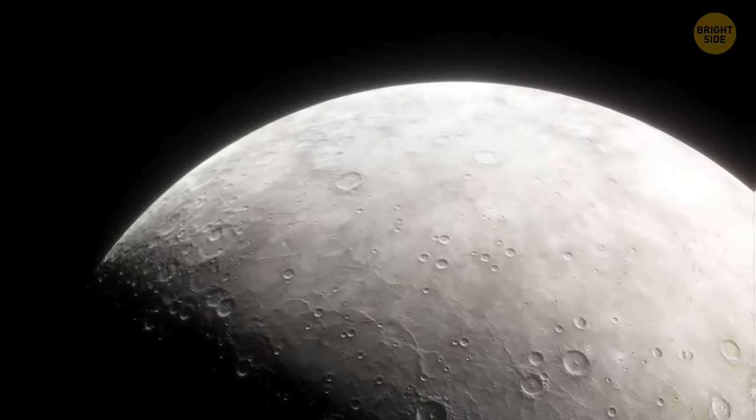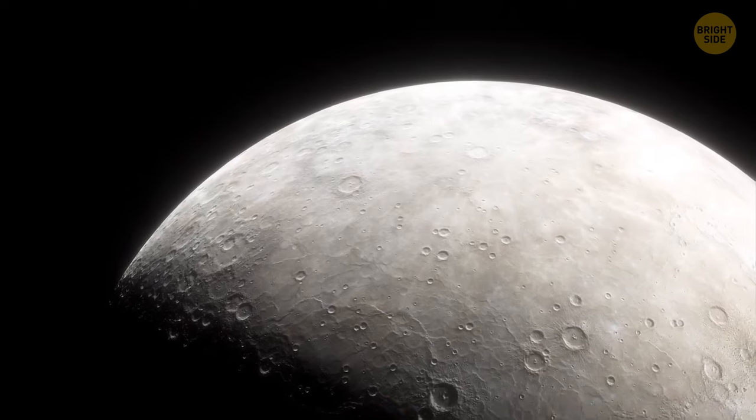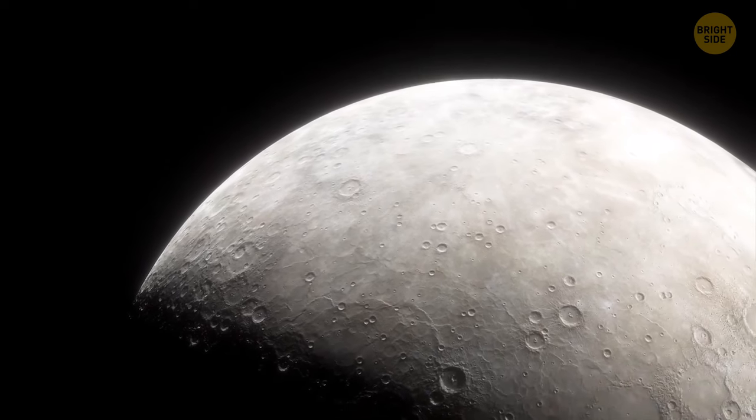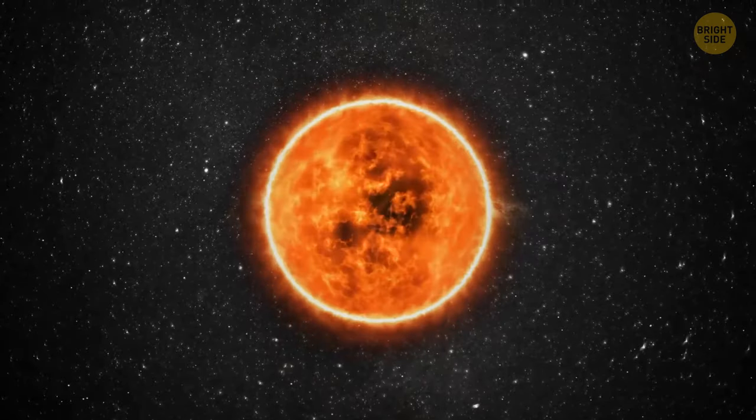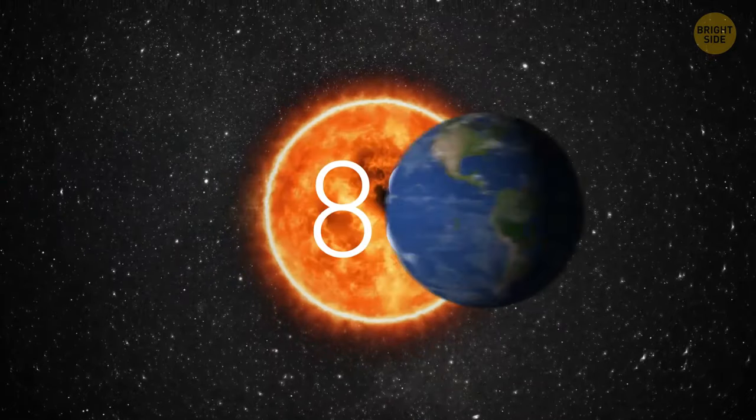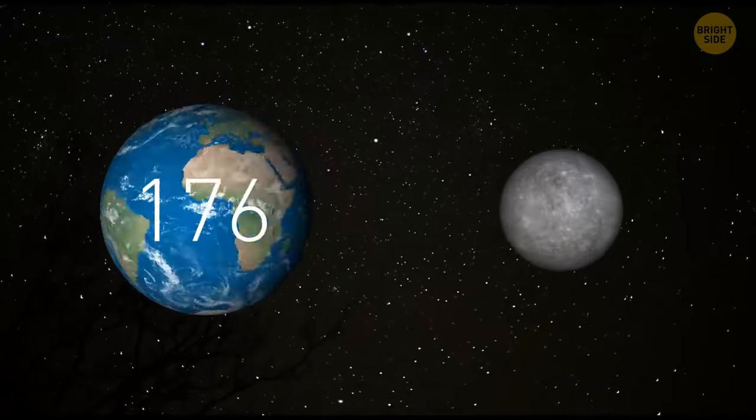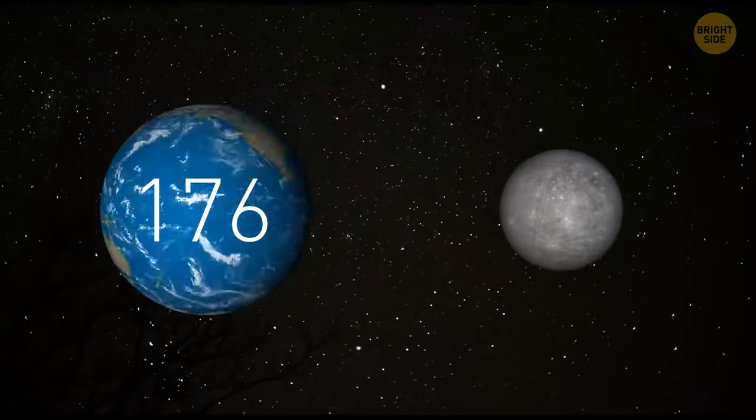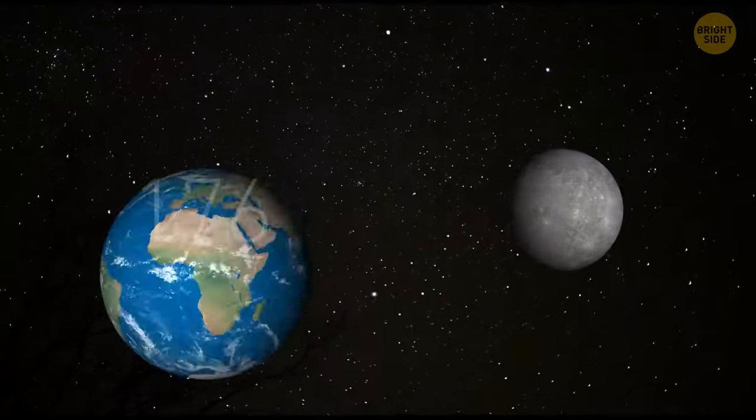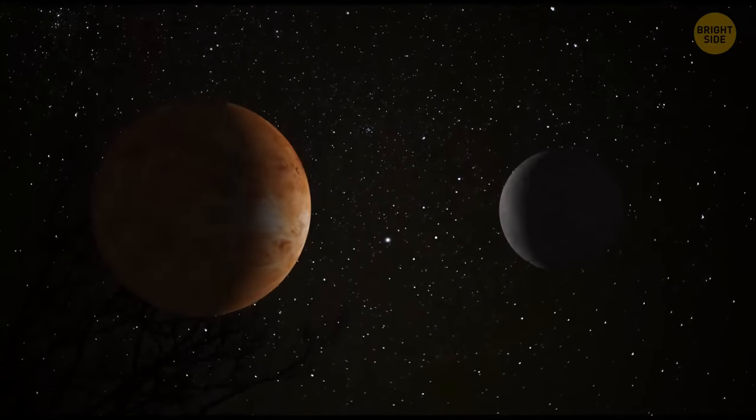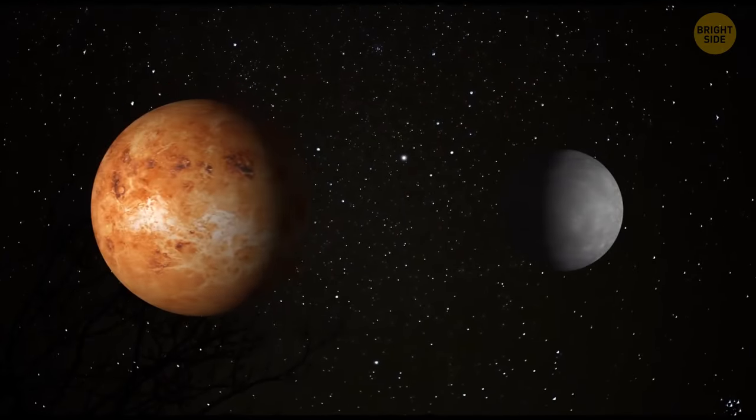Meanwhile, Mercury, the closest planet to the Sun, has an even more speedy orbit than Venus. It completes a full journey around the Sun in just about 88 Earth days. However, it has a slow spin on its axis, which means that one day on Mercury takes about 176 Earth days, basically half a year. Just like with Venus, a day there takes much longer than a year.